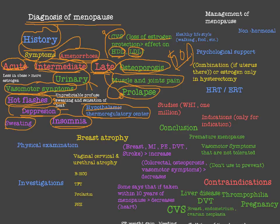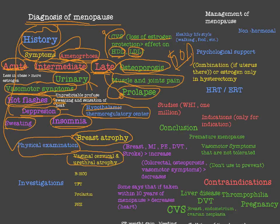Moving to physical examination: breast atrophy is very important to look for. Some patients present with breast atrophy. Vaginal, cervical, and urethral atrophy are also seen, and these may cause vaginal bleeding. In fact, vaginal, uterine, cervical, and urethral atrophy are the most common cause of postmenopausal vaginal bleeding.